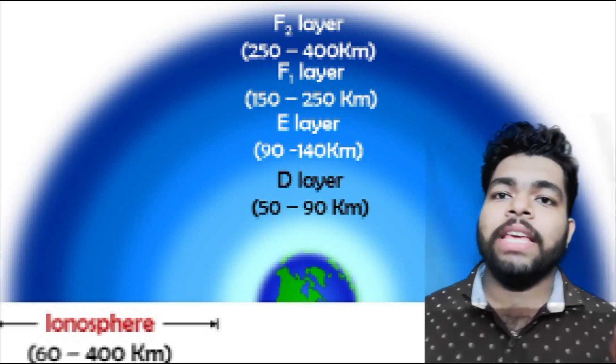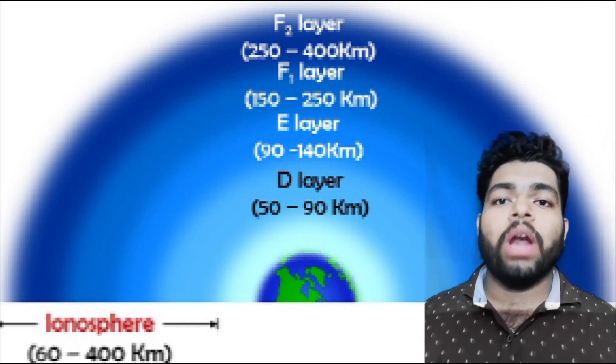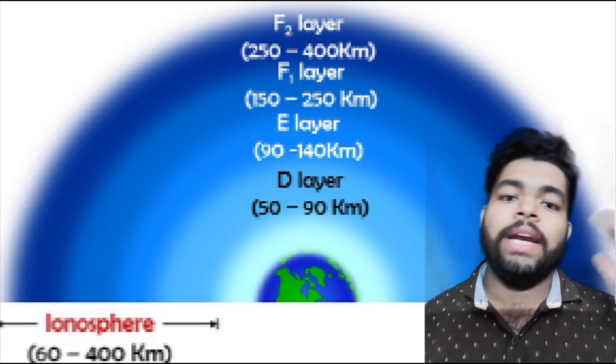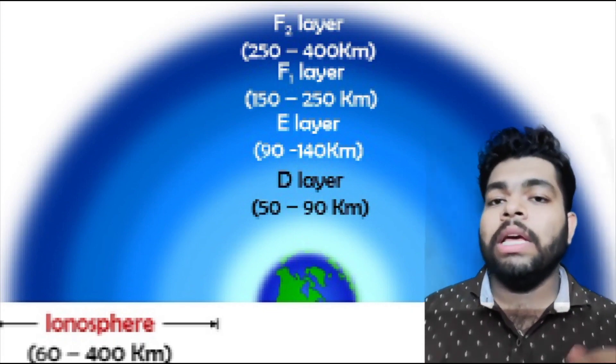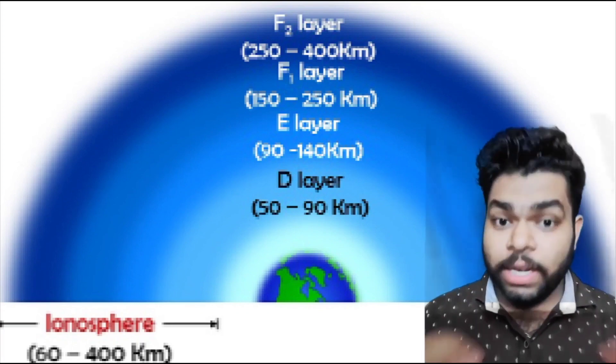The sporadic E region or irregular region occurs in the form of clouds, purely regional. It may be observed in both day and night. It is a thin layer of high ionization density.